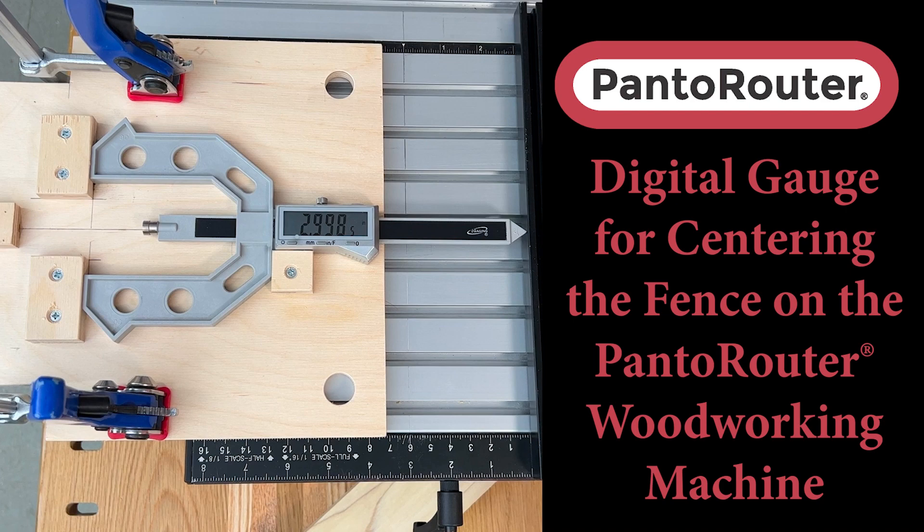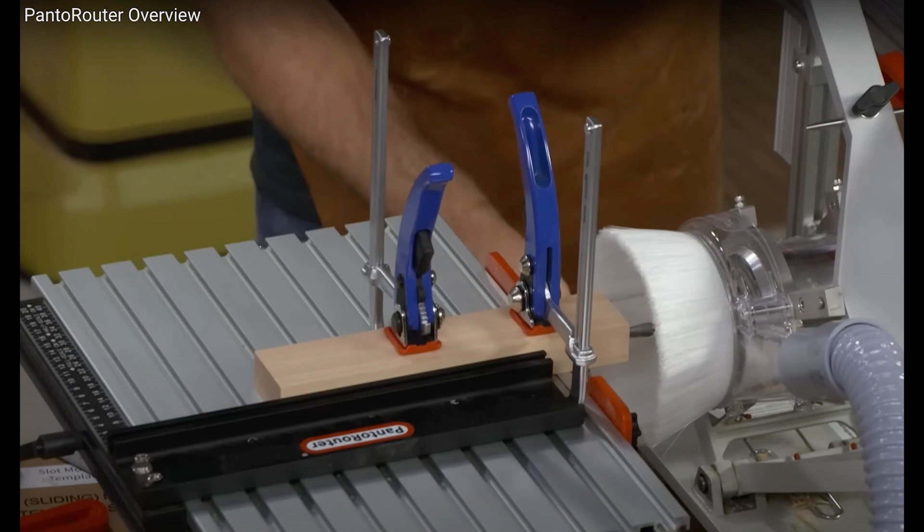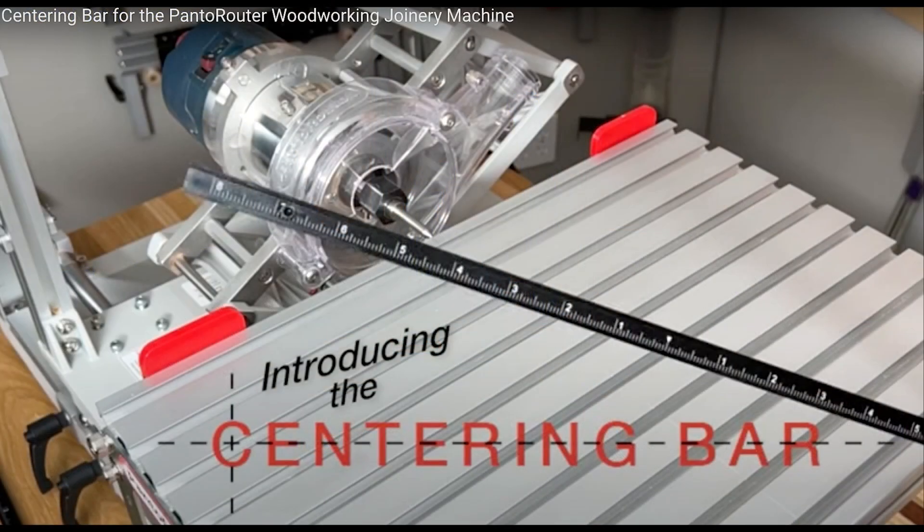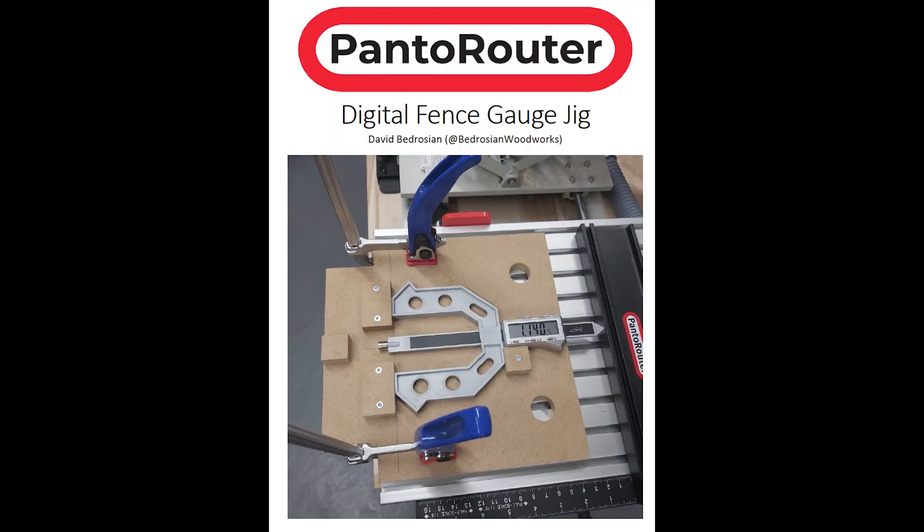The PantoRouter woodworking machine works from the center of templates and the table, and there are several ways of finding center using the centering scale fence or the centering bar, but for those times that you need accuracy to a thousandth of an inch, this is an elegant solution.